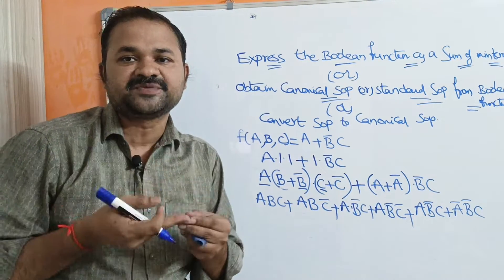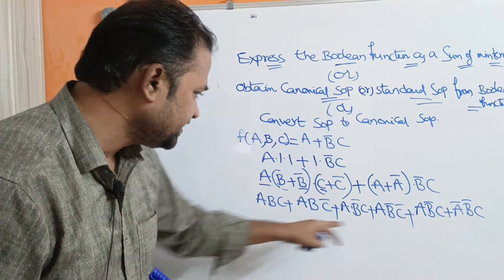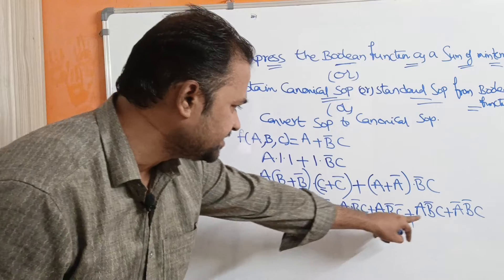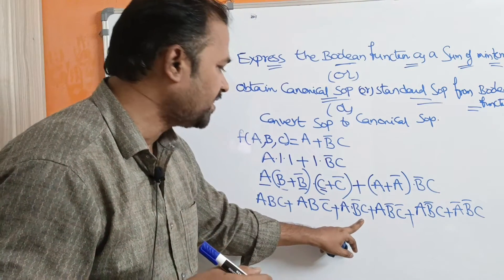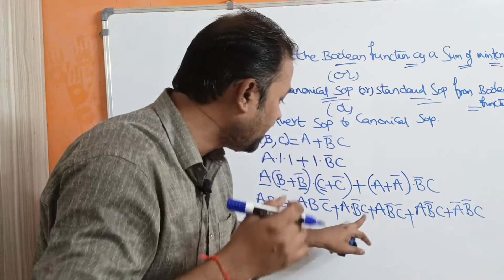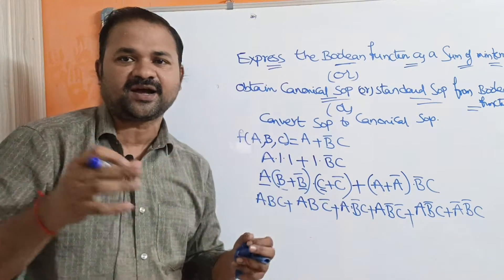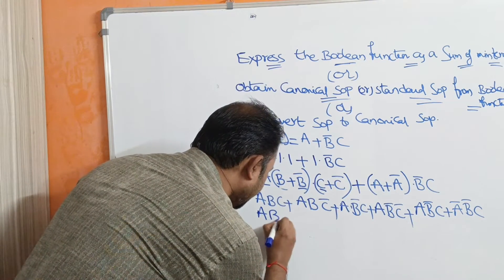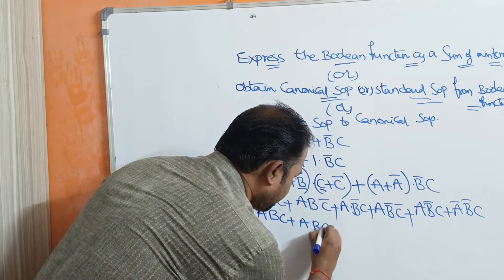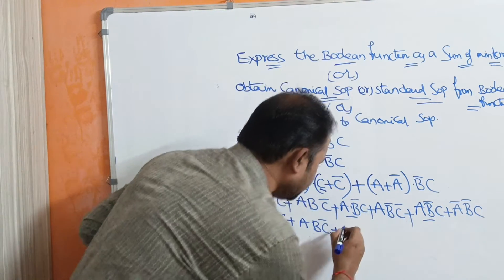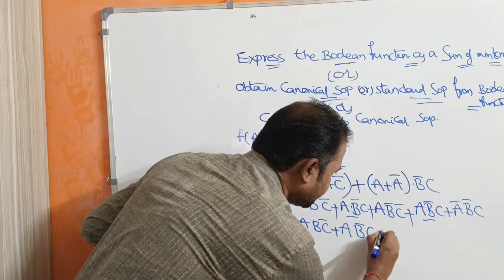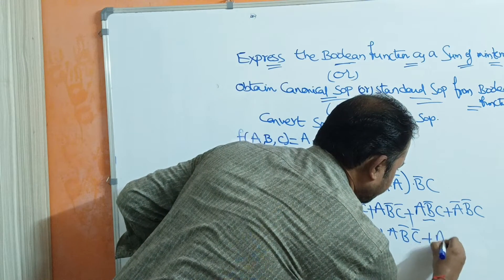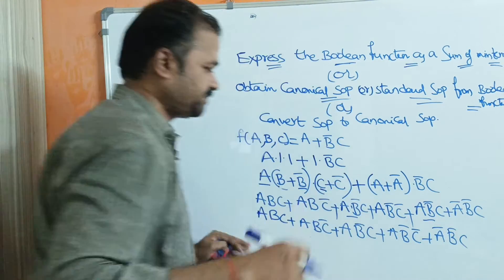Now let us check whether any terms are repeating. We have abc only once, abc-bar only once, but ab-bar c appears twice. We have a formula: a plus a equals a, so let us write that term only once. So: abc + abc-bar + ab-bar c + ab-bar c-bar + a-bar b-bar c.